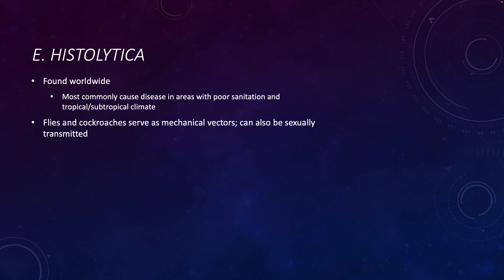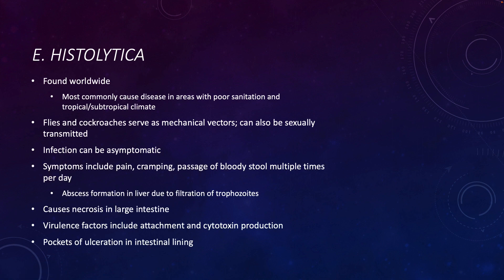Entamoeba histolytica can also be sexually transmitted. In many patients the infection can be asymptomatic, but in patients who do develop symptoms, symptoms include pain, cramping, and the passage of bloody stool multiple times a day. In patients who develop liver abscesses, this is often because the trophozoites have gotten into the bloodstream and the liver tries to filter that, so the trophozoites get stuck and form an abscess. The parasite can also cause necrosis in the large intestine. It has virulence factors including attachment and cytotoxin production, and it can lead to pockets of ulceration within the intestinal lining.